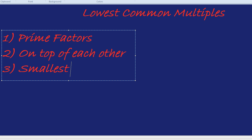Lowest common multiple is exactly the same thing, except at the end you take the biggest. You break it into prime factors, write them on top of each other, and then you take the biggest in each column.